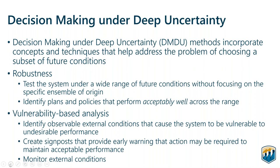The second concept is vulnerability-based analysis. Rather than only thinking about the probability of some bad thing happening — which depends on the hydrology we chose — it is helpful to ask: what external conditions cause our system to perform poorly or become vulnerable? For example, what has the flow been for the last five years, and where are the reservoirs right now? This allows us to create signposts that provide early warning that we may be entering a vulnerable phase, and then monitor those external conditions to be better prepared for a really uncertain future.